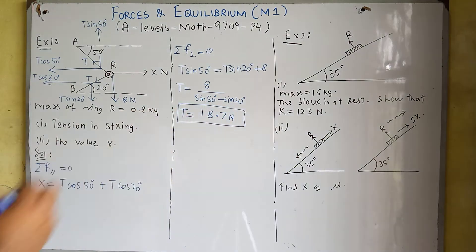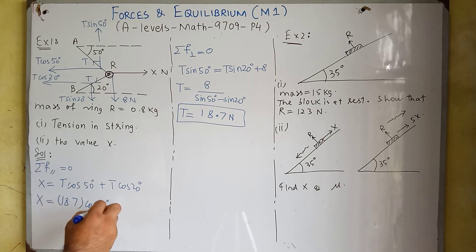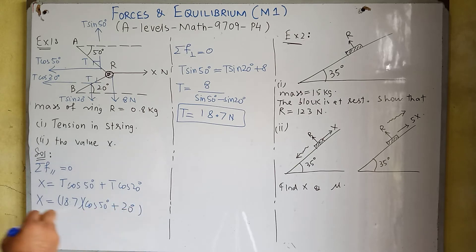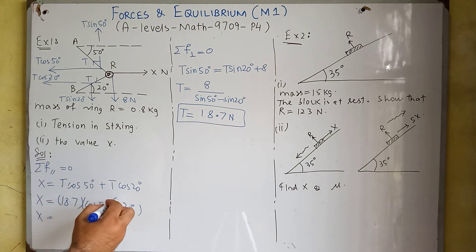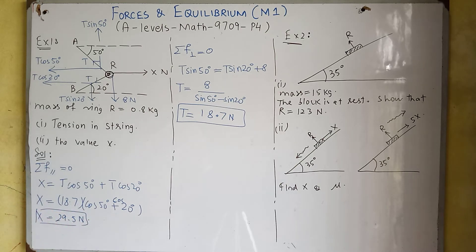Calculating T: 8 divided by (sin 50 minus sin 20) gives us T equals 18.7 newton. Substituting this into the horizontal equation: X equals 18.7 times (cos 50 plus cos 20), which gives X equals 29.5 newton. This is the solution of this example.